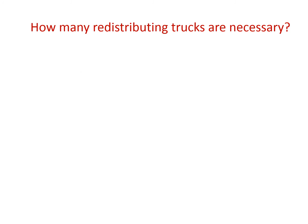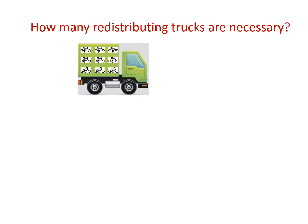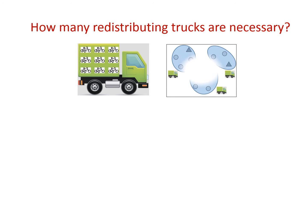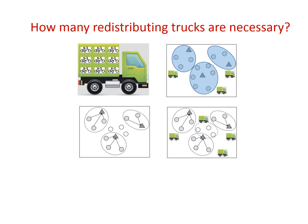Due to the capacity limit of a redistributing truck, we first separate the stations into different clusters, within which one truck is scheduled. Sometimes there will be outlier stations. If there are any outliers, an additional truck will be scheduled.